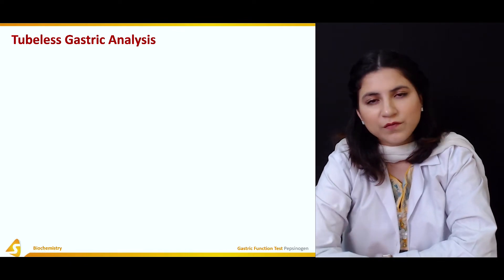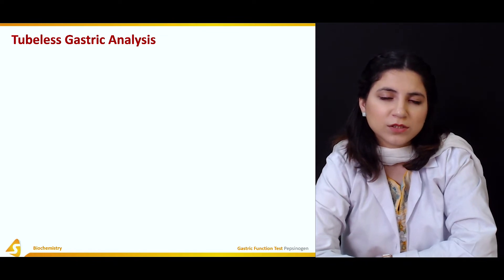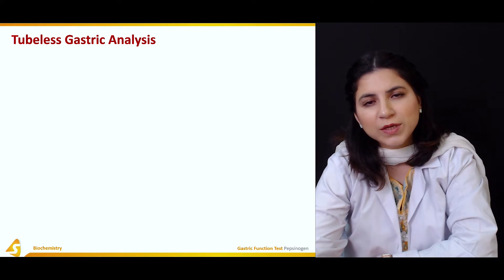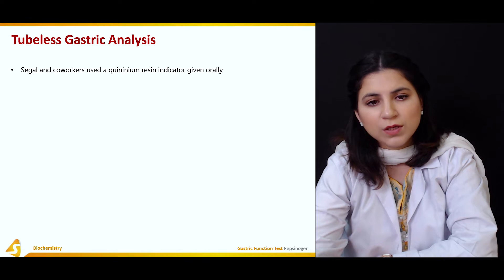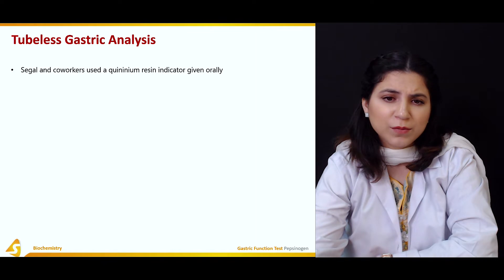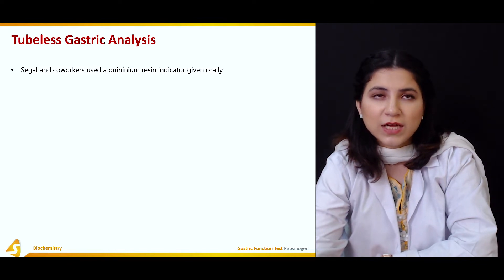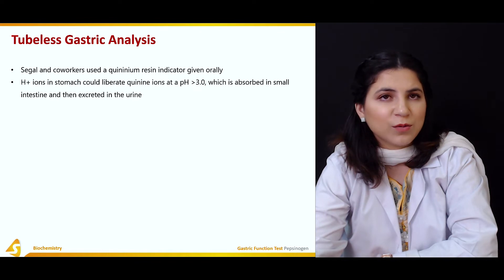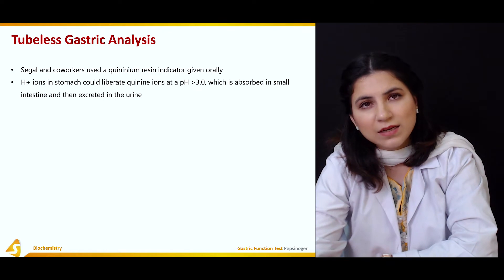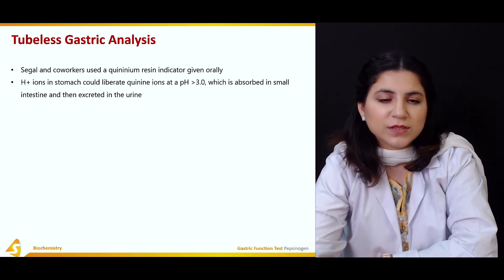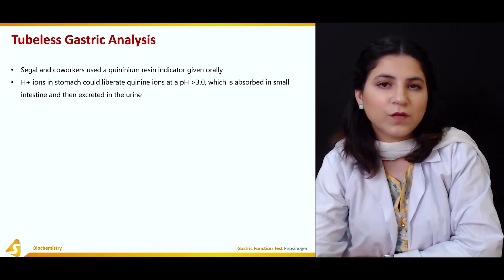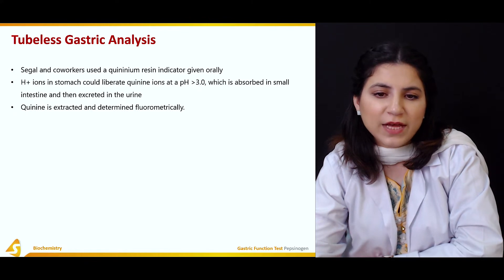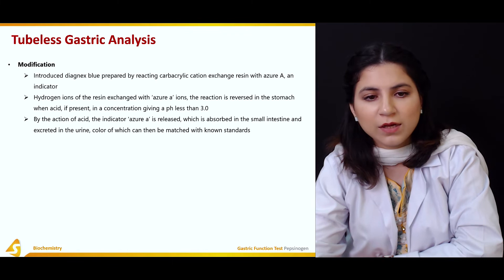All the analyses discussed so far involve a tube being inserted into a person's body. However, there are certain ways to analyze gastric contents without inserting a tube. Tubeless gastric analysis was developed by Siegel and co-workers, who used a quininium resin as an indicator. This resin is given orally to patients, and hydrogen ions in the stomach liberate quinine ions at a pH greater than three. The quinine is then absorbed in small amounts in the small intestine and excreted in the urine. It is then extracted from the urine and determined fluorometrically.